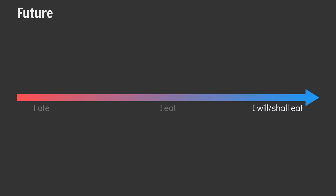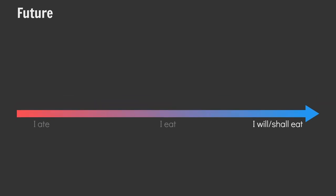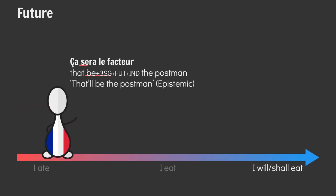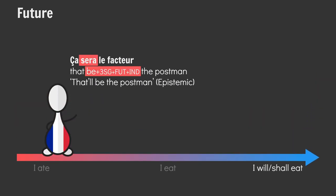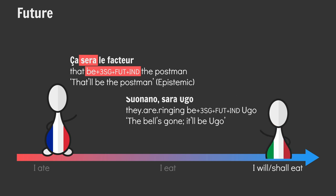As mentioned earlier, the future is the moodiest of the tenses. Will and shall both express future time alongside various other modalities. Even languages with inflected future tenses often employ modality to signal future time, like French or Italian.